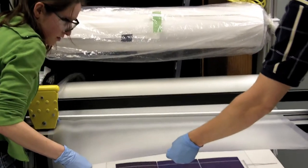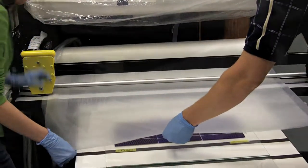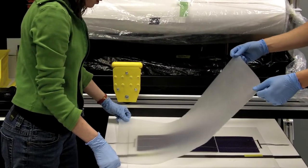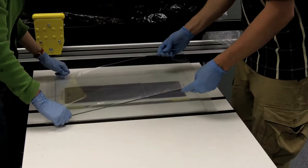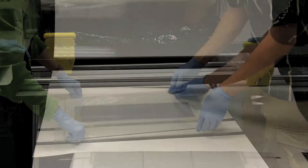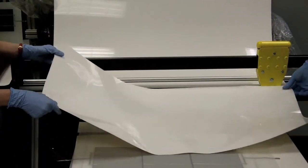The next step is to seal the solar cells against the elements. The researchers lay a film of laminating material on the cells, then cover them with a glass sheet that forms the front of the solar panel. Then they add a plastic material to seal the back.